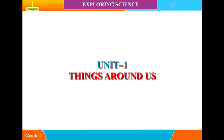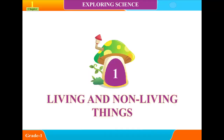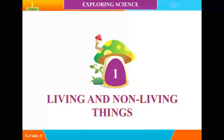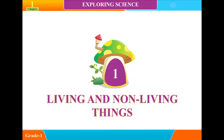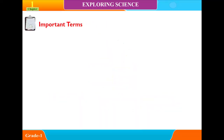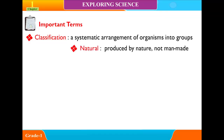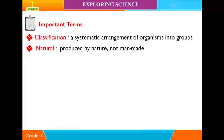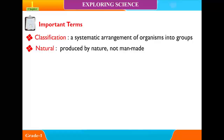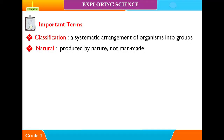Unit 1: Things Around Us, Chapter 1 - Living and Non-Living Things. Important Terms: Classification means a systematic arrangement of organisms into groups. Natural means produced by nature, not man-made.